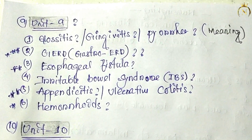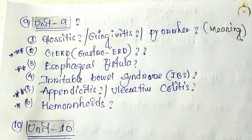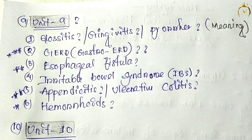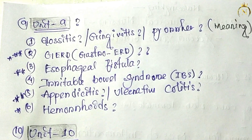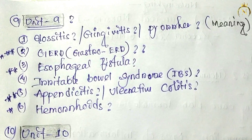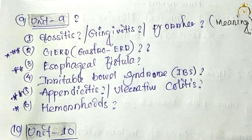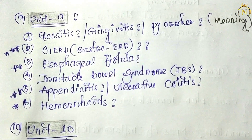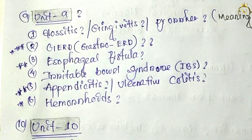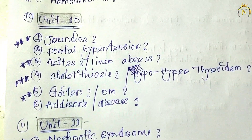Unit nine covers cholecystitis, gingivitis, and peptic ulcer — these are coming for meaning questions. For units eight, nine, and ten, the topics are such that you just read them as meaning only. For example, gingivitis means inflammation of the gum — just know what the word means, and then you can write management, diagnosis, and goals yourself, as the format is the same as Medical Surgical 1 and 2.